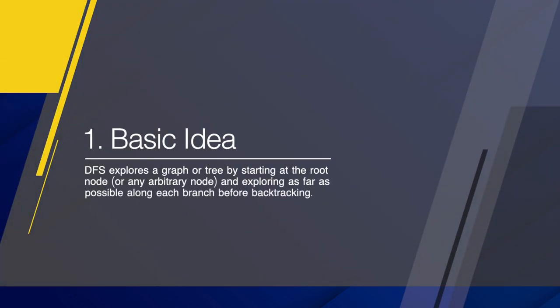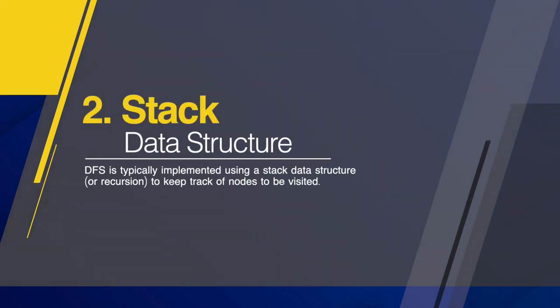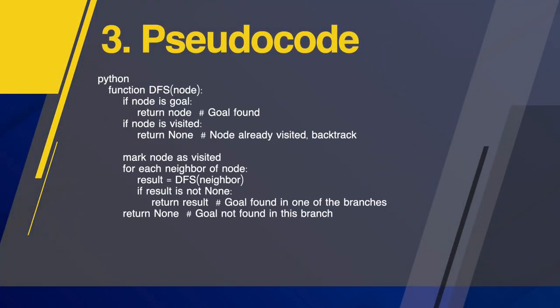Here is an overview of how DFS works in AI. The basic idea: DFS explores a graph or tree by starting at the root node or any arbitrary node and exploring as far as possible along each branch before backtracking. DFS is typically implemented using a stack data structure or recursion to keep track of nodes to be visited.